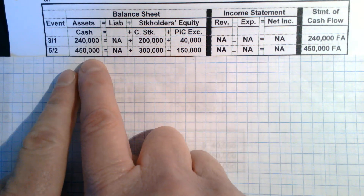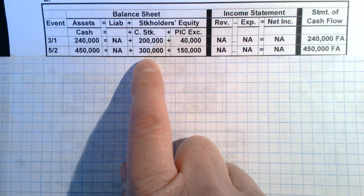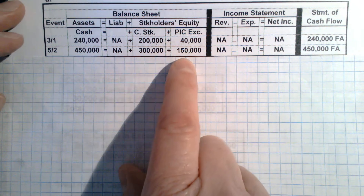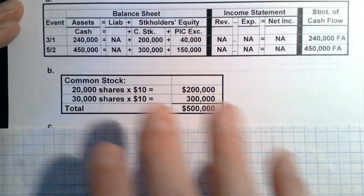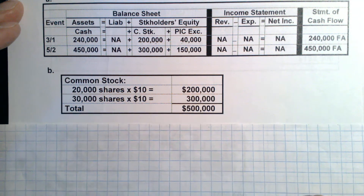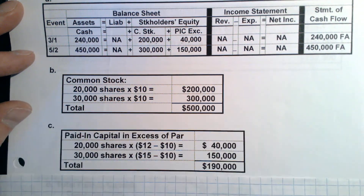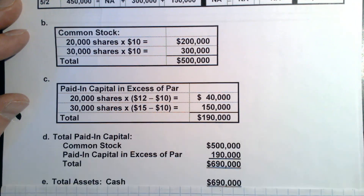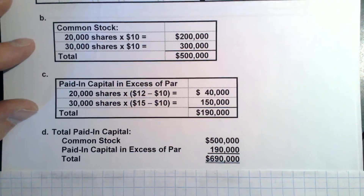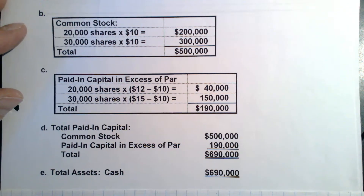On the next transaction, when we issue 30,000 shares at $15 per share, we'll get $450,000 in cash. $300,000 will be the increase to common stock — that's 30,000 shares times the $10 par. And then the excess goes to paid-in capital in excess. So that gives us the answers: common stock in total $500,000, paid-in capital in excess of par total $190,000, total paid-in capital is the sum of those two, and their assets are $690,000 in cash.